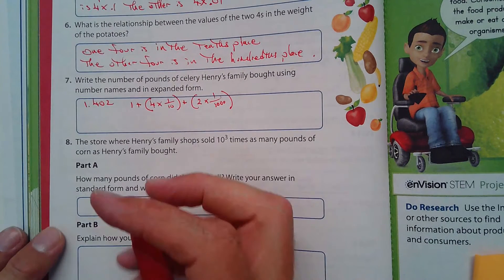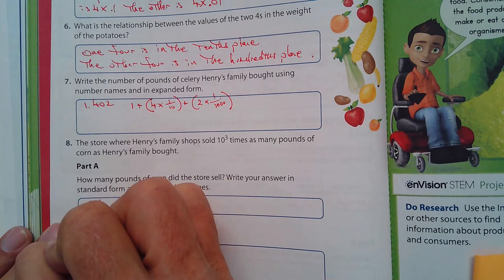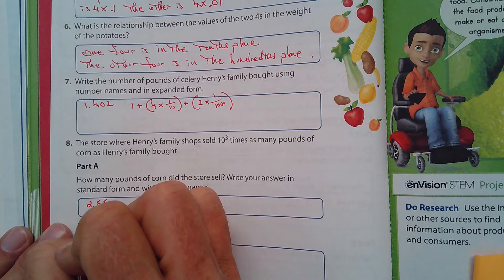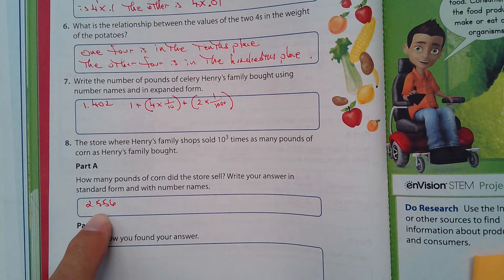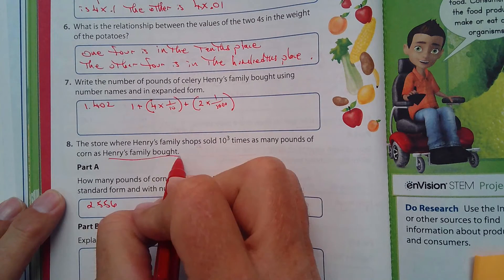Okay, so I'm going to write this down here, 2.556. And that's how much Henry's family bought, okay?